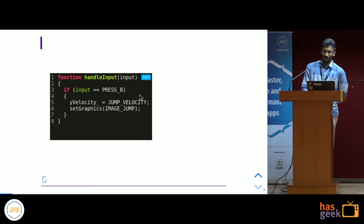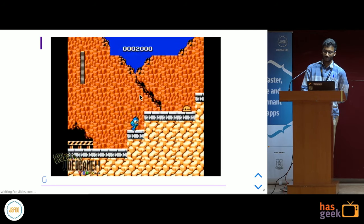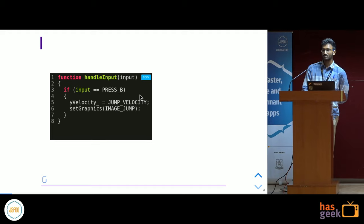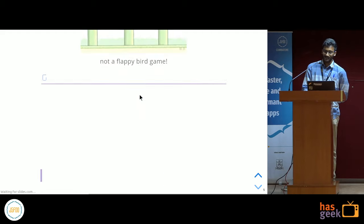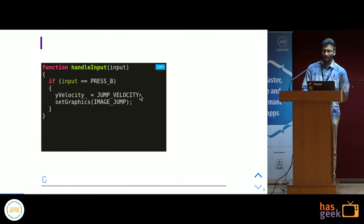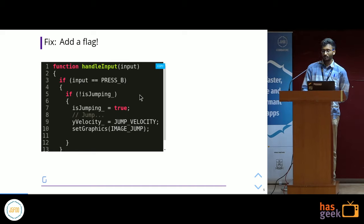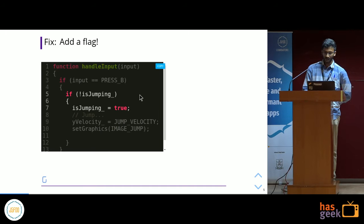If you see the previous code, the player can only jump once. So what's the issue with this small piece of code? The problem is we are not building a Flappy Bird game, so there is no air jumping. Once a B press is recognized, we should put a boolean flag to ensure that further presses of button B don't keep the player jumping in the air. So we add a boolean flag called isJumping and set the graphics image as jump only if the player is not already jumping.